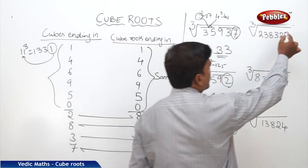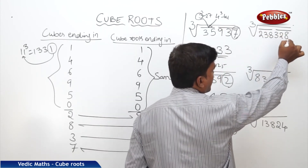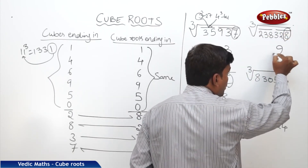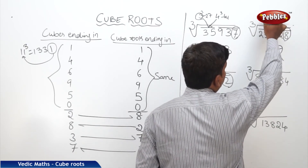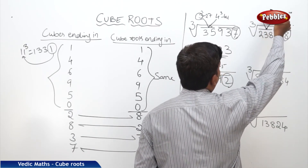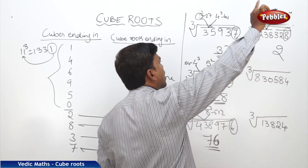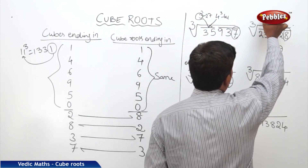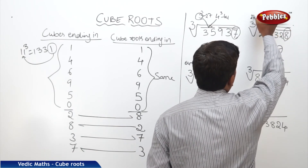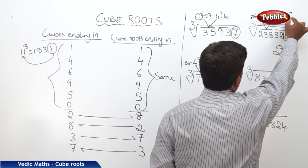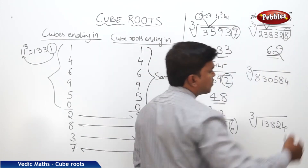Next problem: partition into 3 digits. The cube number ends in 8, so the cube root should end in 2. The second partition is 238. 238 comes between 6 cubed (216) and 7 cubed (343). We take the lesser number, which is 6. So the answer is 62.